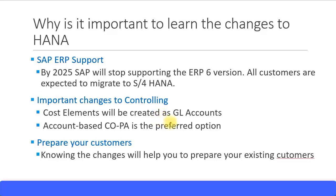Even your secondary cost elements will be created as GL accounts. This is in regard to the universal journal dual entry table, where in real time your CO, FI, COPA, asset accounting, and inter-ledger accounting information are all stored in one table. To facilitate that, all cost elements will be created as GL accounts.